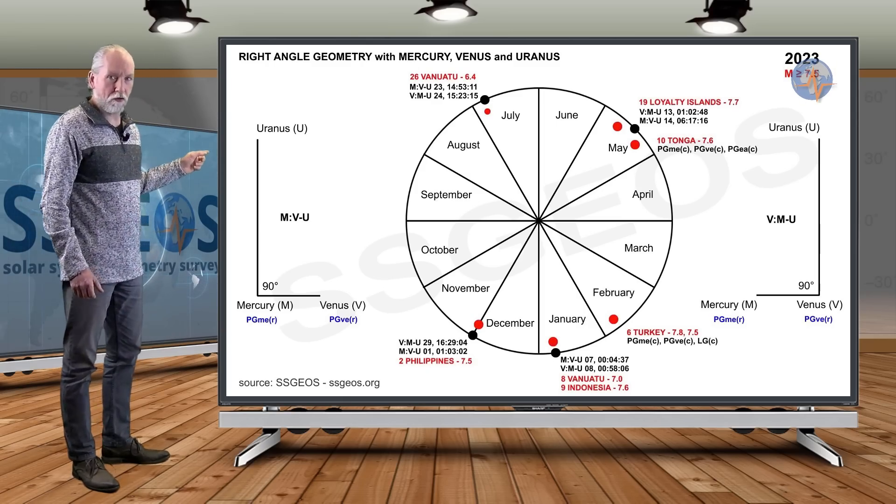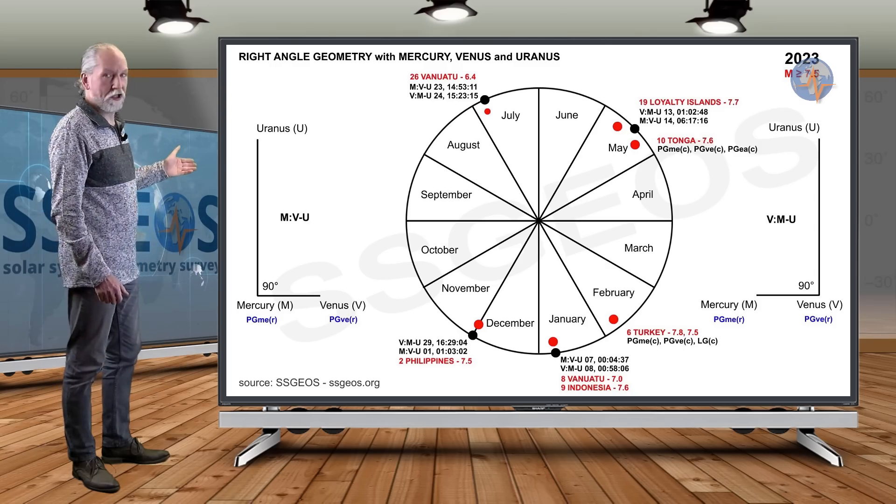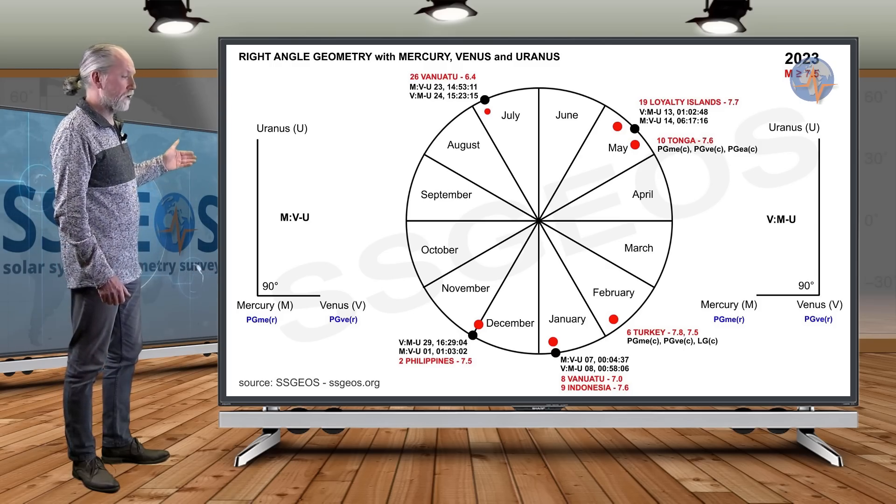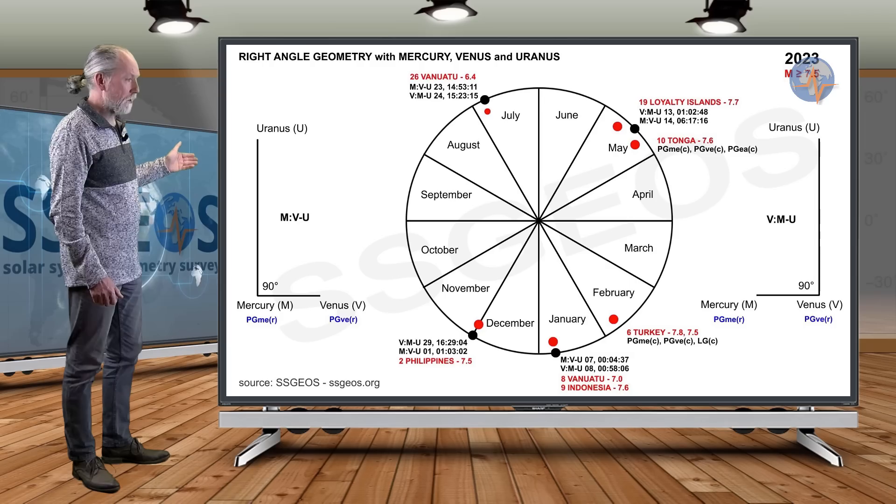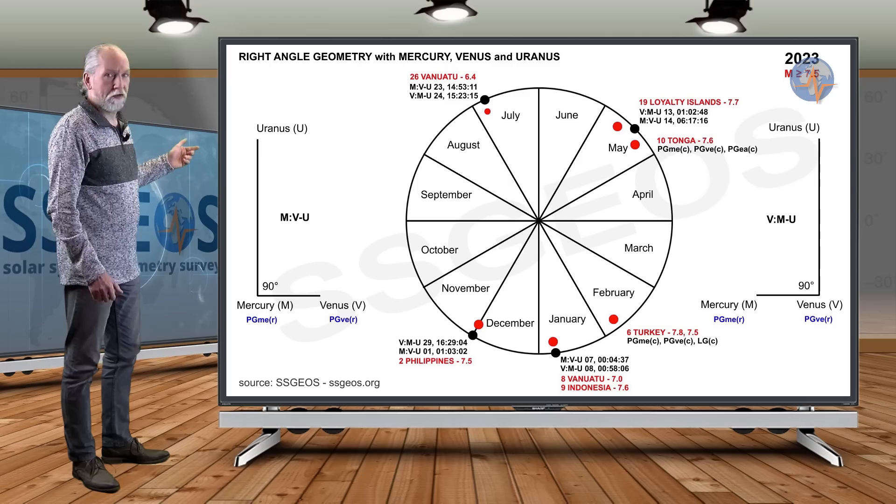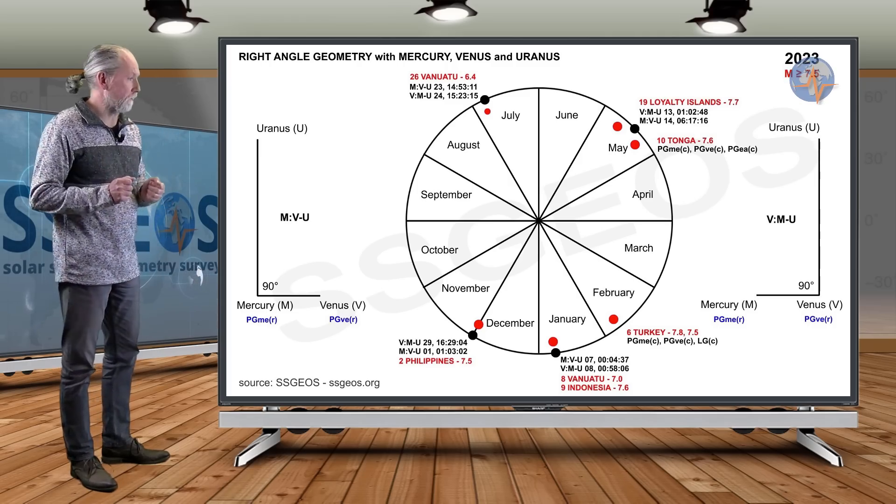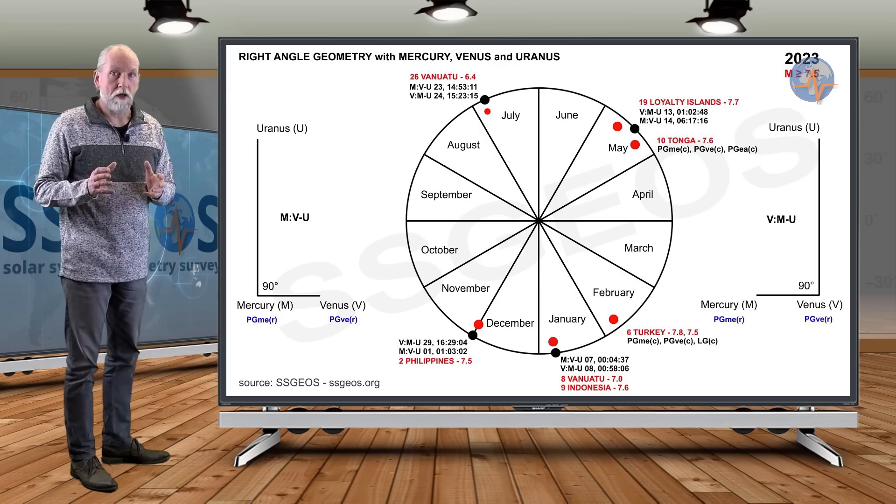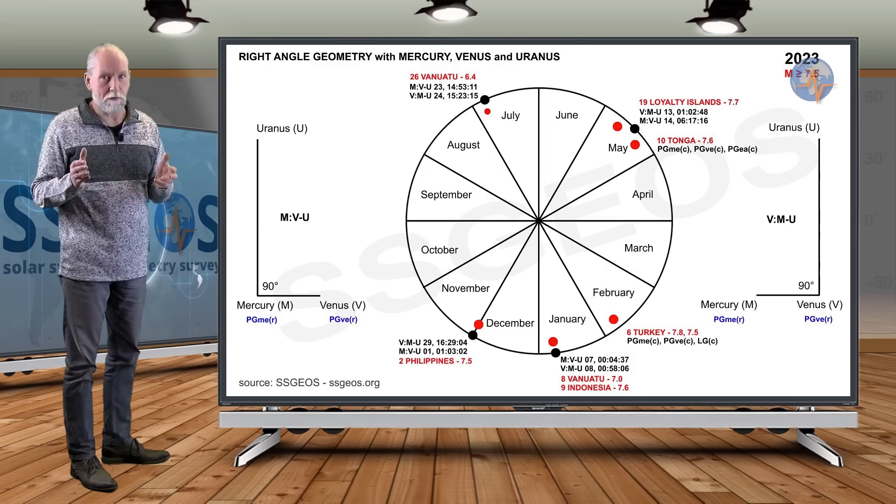Let's have a look when that actually happened. As you can see, three out of five occurred just after this right angle geometry with Mercury and Venus. It happened in early January, January 7th and 8th, and we had this 7.6 on the 9th in Indonesia. In May we also had Mercury-Venus paired in right-angle geometry on the 13th and 14th, and within five days on the 19th, the Loyalty Islands 7.7. In July, only a mid-six magnitude within two days. A seismic response but not all that much. Again, that depends on the stress levels in Earth's crust whether or not we're going to have this big one.